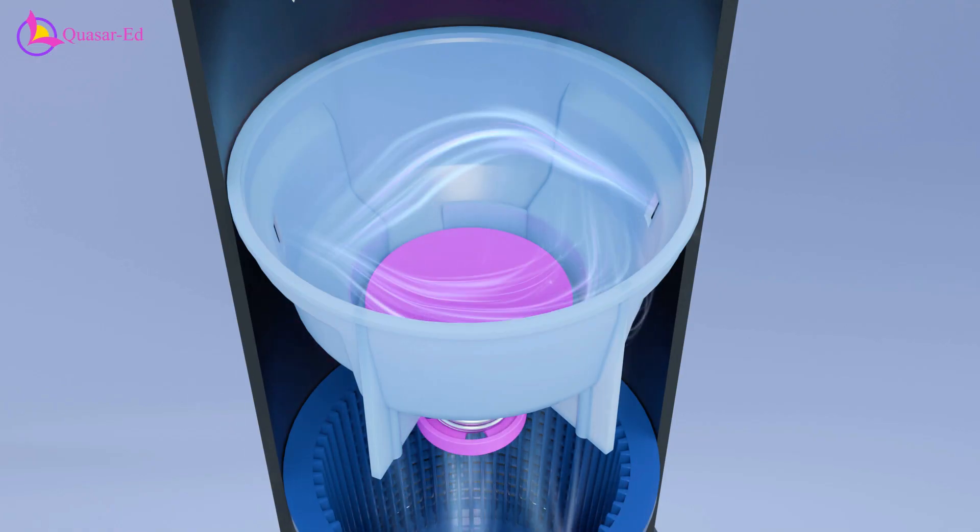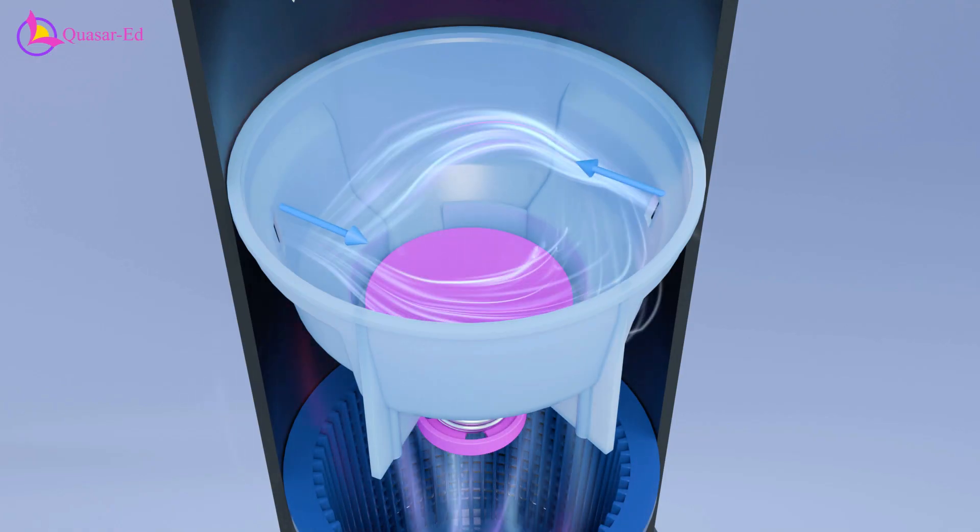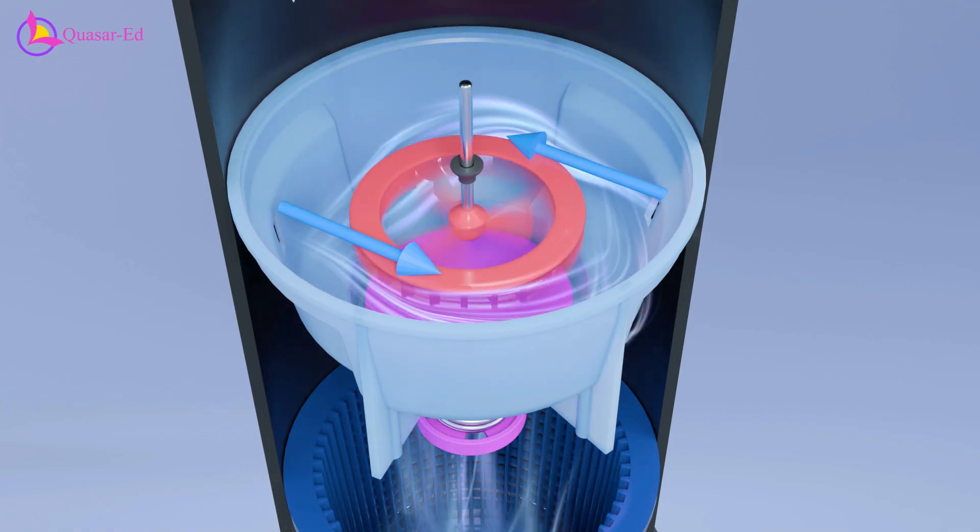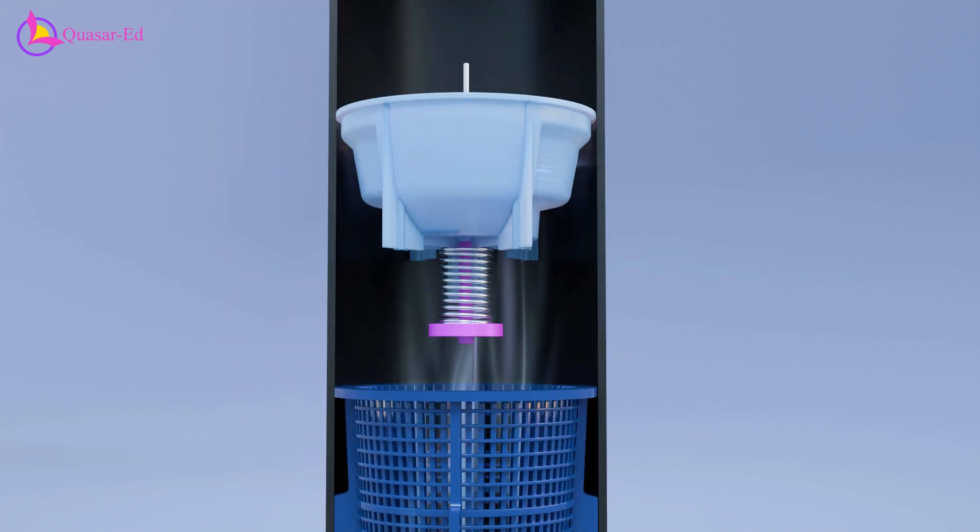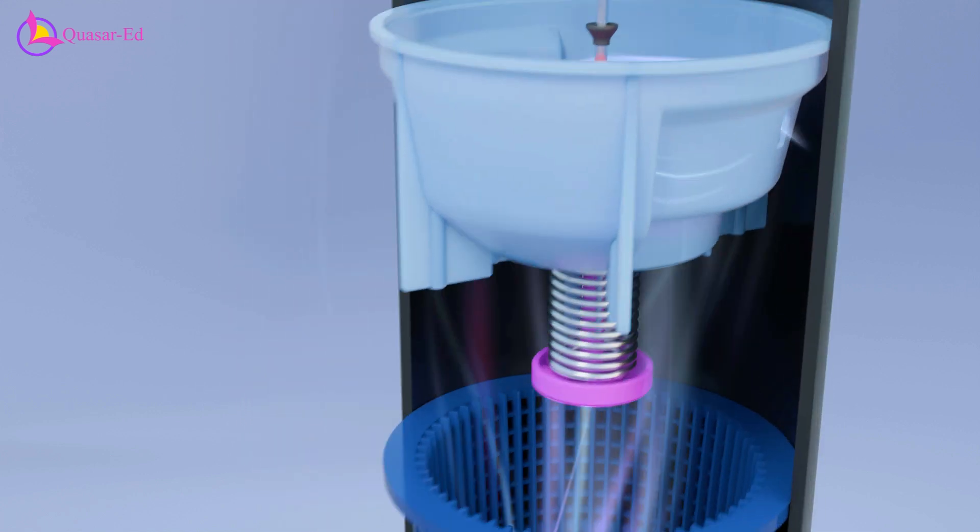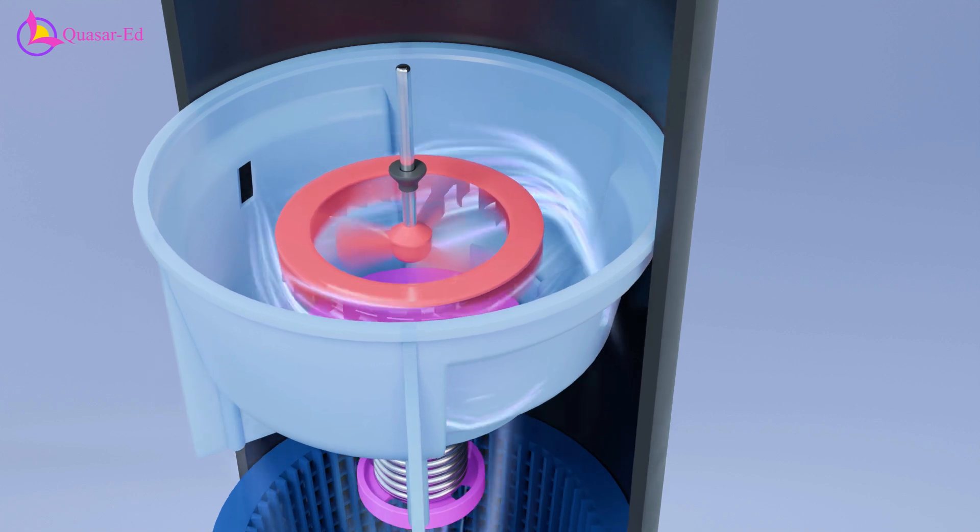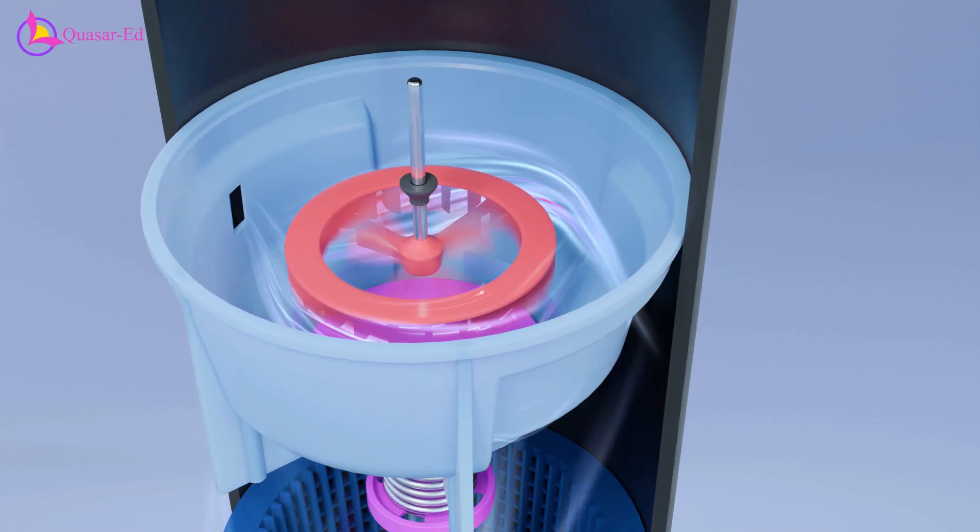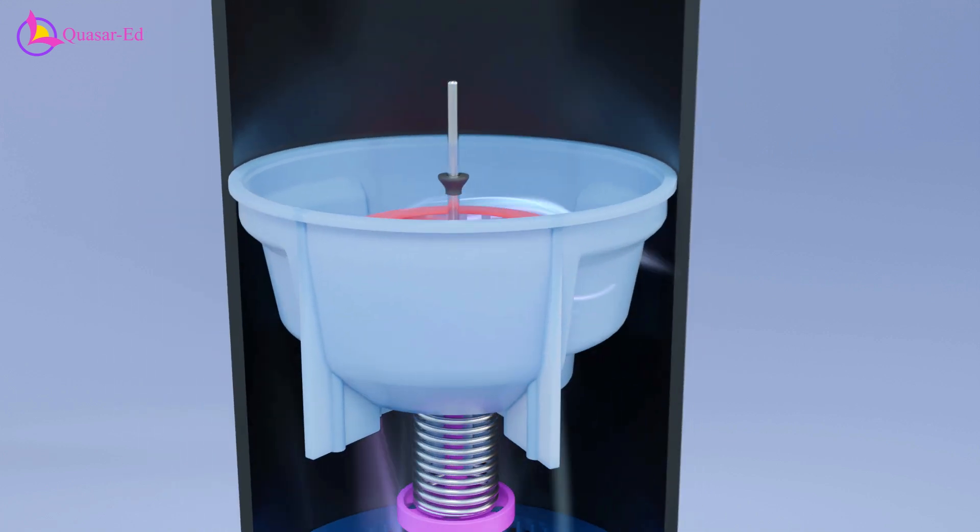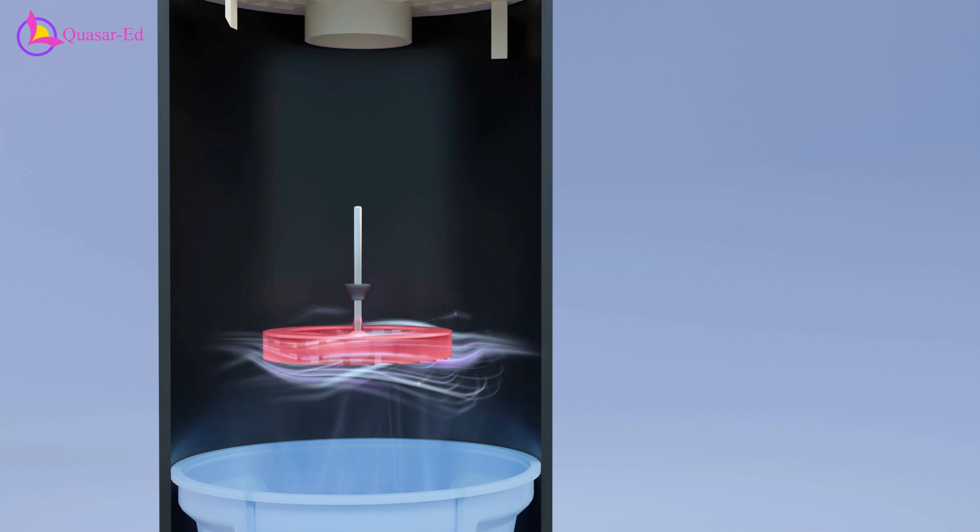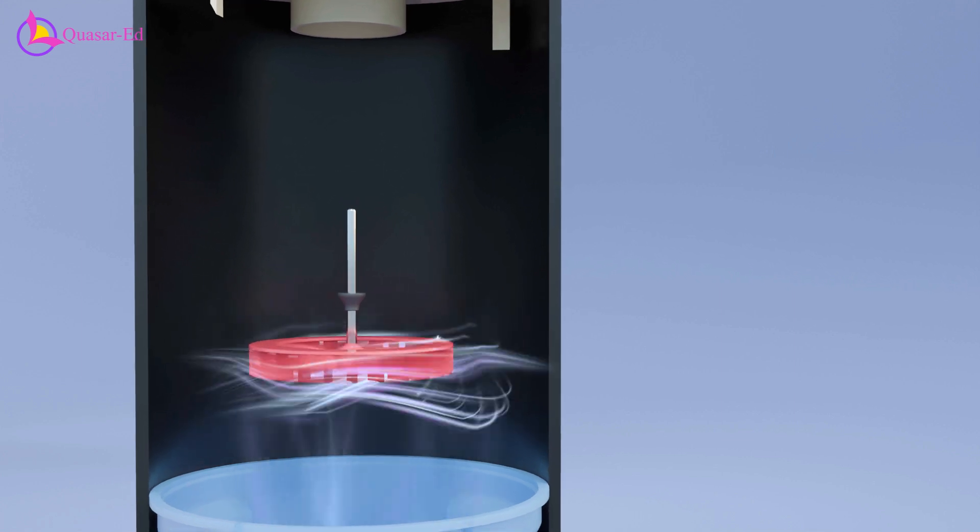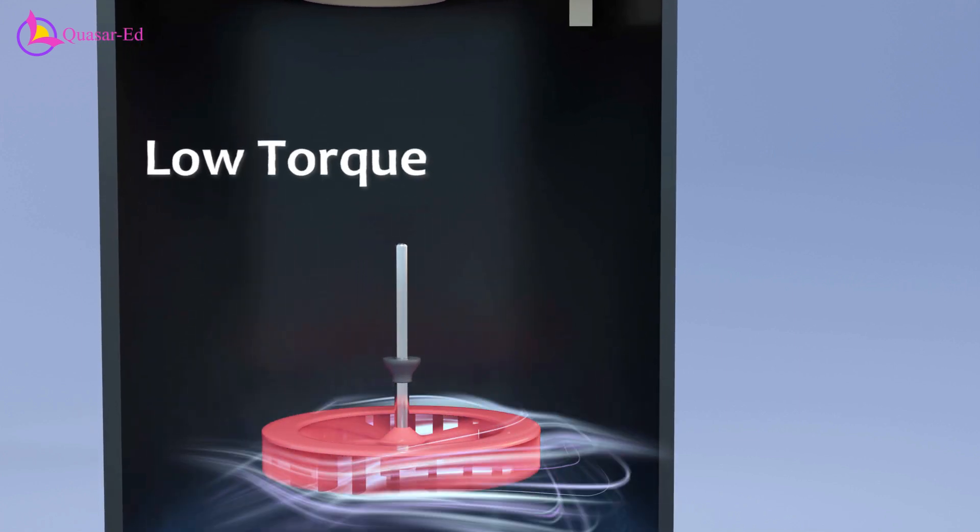Furthermore, these two small openings direct water tangentially onto the turbine blade. This design ensures that the high-velocity water entering the turbine chamber exerts force on the turbine blade, causing it to rotate rapidly. Now we have rotational power from water pressure, but it only spins fast with low torque and only in one direction.